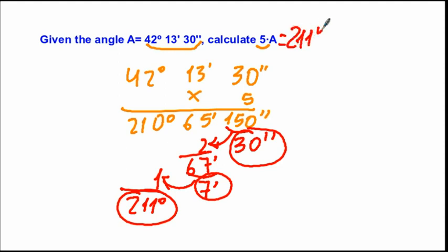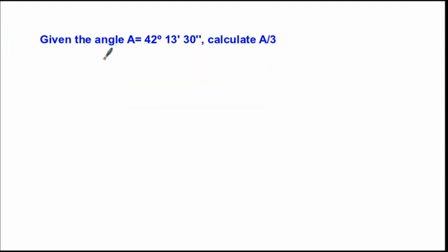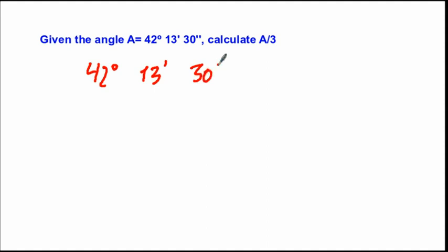So the result of multiplying the angle by 5 is 211 degrees, 7 minutes, and 30 seconds. Finally, let's look at division. We have 42 degrees 13 minutes and 30 seconds divided by 3.